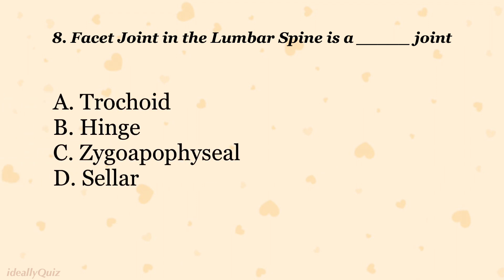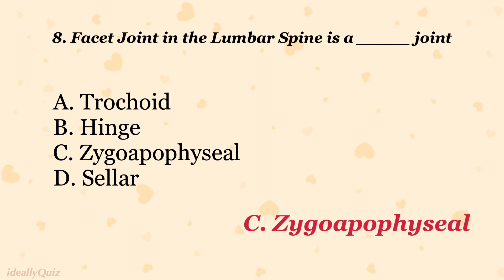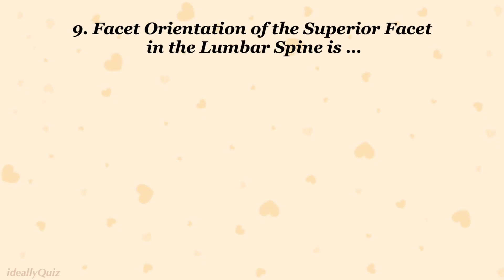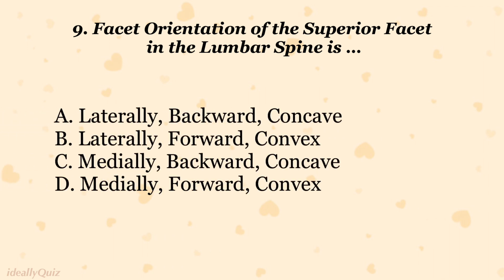The facet joint in the lumbar spine is which type of joint? A) trochoid, B) hinge, C) zygapophysial, D) sellar. The correct answer is C) zygapophysial. The facet orientation of the superior facet in the lumbar spine is: A) laterally backward concave, B) laterally forward convex, C) medially backward concave, D) medially forward convex.